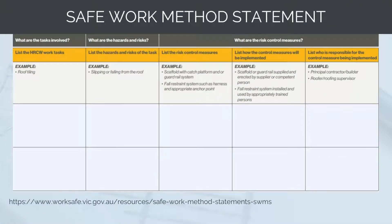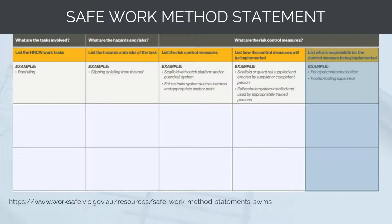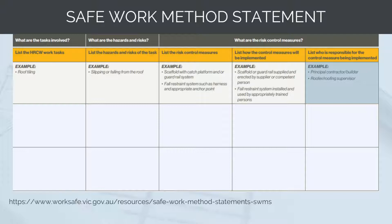They are used to check that the minimum controls are in place for any high-risk construction activity. An example SWMS from WorkSafe Victoria is shown on screen. A SWMS consists of listing out all of the tasks involved in completing an activity, identifying the hazards with each task, listing the control measures and how they will be implemented, and identifying who will be responsible. The template SWMS shows the high-risk activity of roof tiling, with the hazard of slipping or falling from the roof, and controls including scaffold with a catch platform, guardrail system, and a fall restraint harness. I'll attach an example copy of the SWMS to the course notes for you to review.